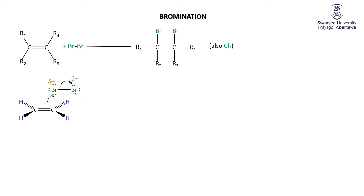Now we can do what we did with HBr — the slightly positive here means the pi cloud electrons get attracted to that, wanting to make a bond. And of course as this bond is being made with this bromine, this bromine then tells the other bromine to get lost — heterolytic cleavage of the bond — taking its electrons with it, making a bromide anion. Nothing weird so far.